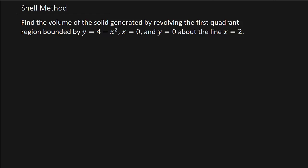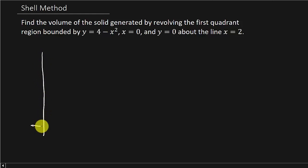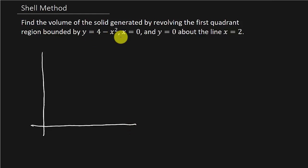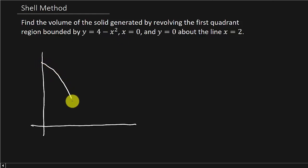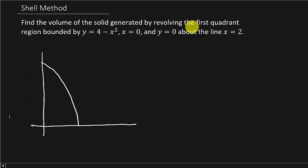The first thing we need to do is draw a picture. So let's draw the graph here. We know 4 minus x squared is a parabola that opens downward with the vertex at (0, 4). It continues on but we don't need that part of the graph because it tells us we just want the first quadrant, so we're just interested in this part of it.